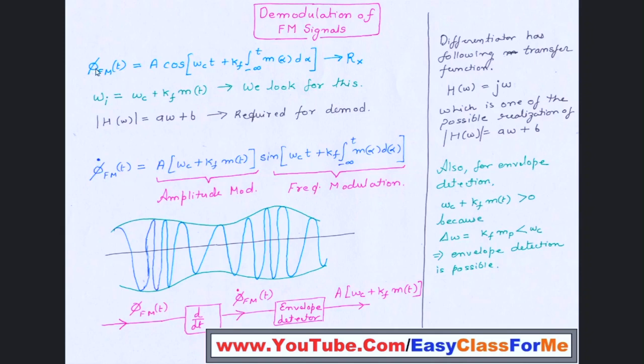So this complete signal, which is the derivative of your frequency modulated wave, it will contain two parts: one is amplitude modulation part and one is frequency modulation part. And if you plot the signal, you will get the same frequency modulated wave.